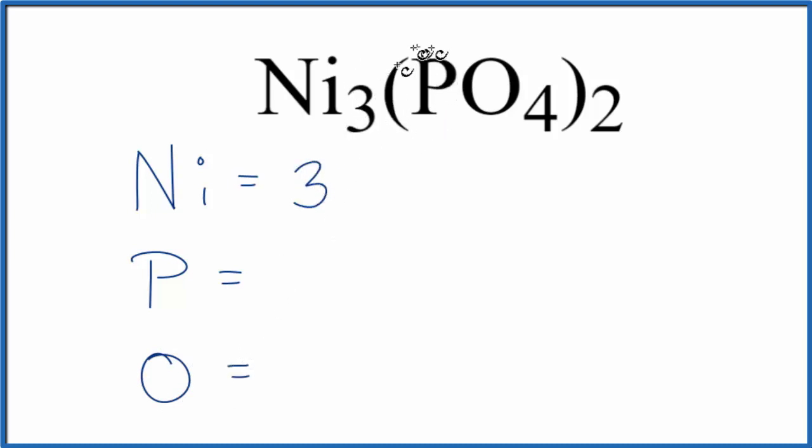For the phosphorus there's nothing written after it so we assume there to be a one there, but because the phosphorus is in the parentheses, the PO4, the whole thing is in parentheses, we multiply it by the subscript of 2. 2 times 1 equals 2 phosphorus atoms. 2 times 4 equals 8 oxygen atoms.